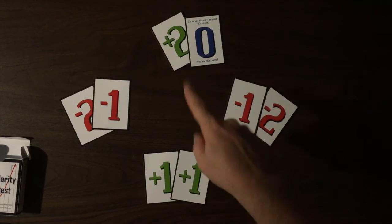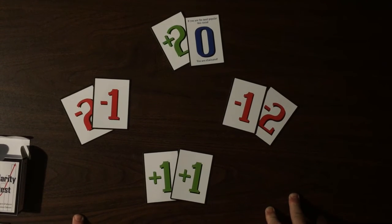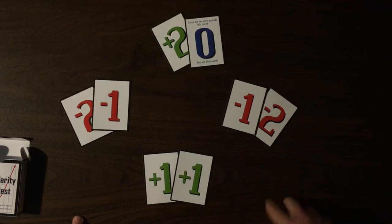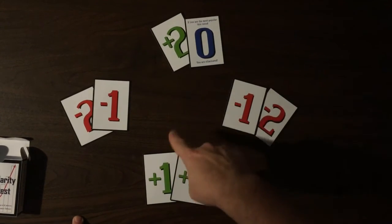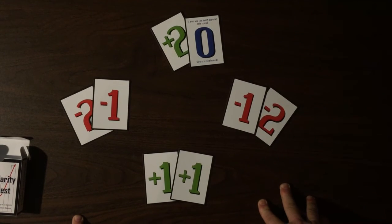So in this situation, nobody would be eliminated because in Popularity Contest, there is a rule called safety in numbers. Safety in numbers states that if you are tied with anybody for either highest or lowest popularity, no one is eliminated.